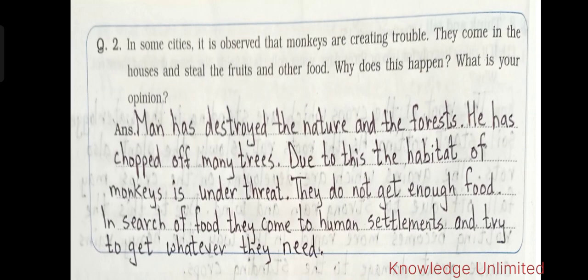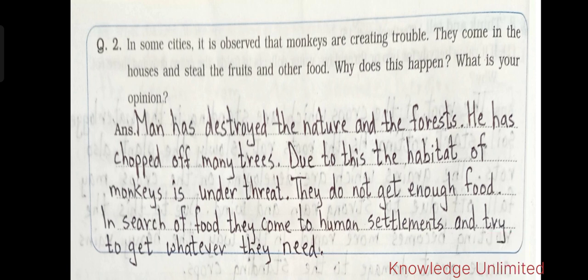Second open-ended question: in some cities, monkeys are creating trouble — they come into houses and steal fruits and other food. Why does this happen? Man has destroyed nature and forests by chopping off many trees. Due to this, the habitat of monkeys is under threat. In search of food, monkeys come to human settlements and try to get whatever they need.